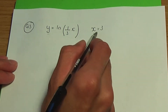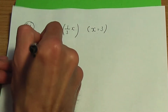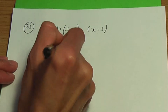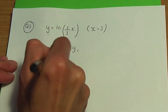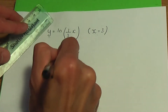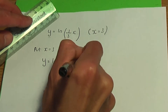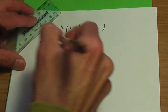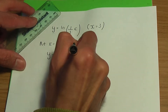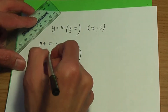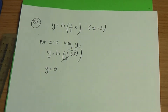Here's the equation of the curve and the x-coordinate which is 3. If I put x equals 3 into y, then y equals ln of 1 over 3 times x, with x replaced by 3. I can cancel this 3 with this 3, giving me 1 in the bracket. And ln 1 is 0. So that is the corresponding y-coordinate.